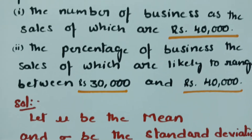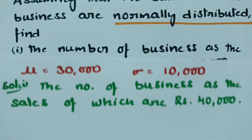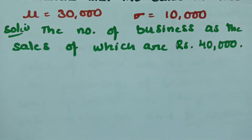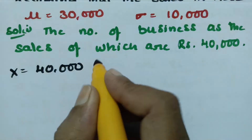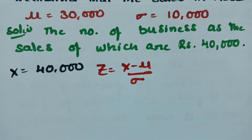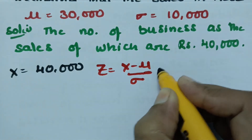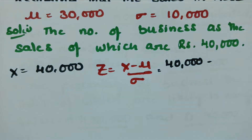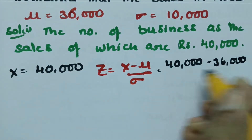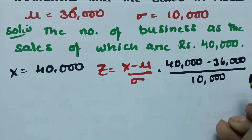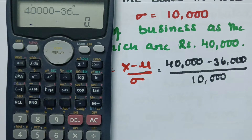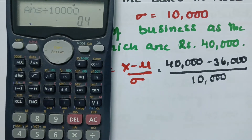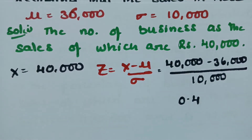For the first question, we find the number of businesses whose sales are above rupees 40,000. When x is equal to 40,000, the z variate is z = (x - mu) / sigma = (40,000 - 36,000) / 10,000.